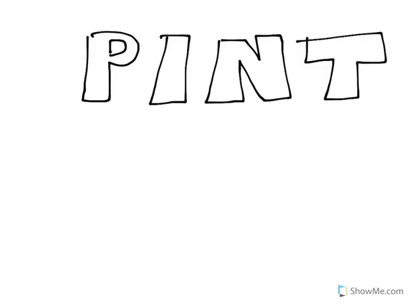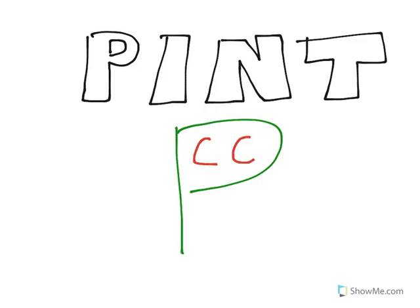Next we have a pint. I'm going to draw the pints in green. I'm going to draw a P for pint. Because there are two cups in a pint, inside that P I'm going to put two C's — just like this. So each C is a cup, and it will remind you that there are two cups in one pint.